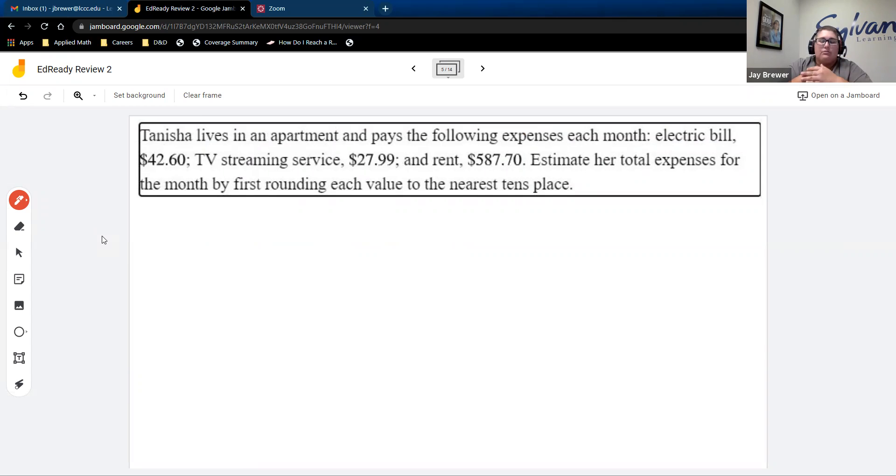Alright, I'm going to assume you guys don't have questions, so we'll keep it going. And then estimating total bills. So for this problem, all you have to do is you have to pay attention to which place you're supposed to round to. So in this case, it's the tens. So for the electric bill, if we're rounding 42.6 to the nearest tens, you want to look at the 2 because it's in the ones place. So we're still going to be at $40. TV streaming, 27.9, so you're going to look at the 7, so it's going to round up to $30. And rent is $587.70. We're going to, again, look at the 7 that's in the ones place. So that's going to give us 590.